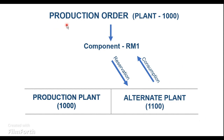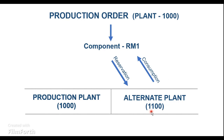So here, we are going to create a production order in plant 1000. And under the bill of material, we do have the component RM1. So this RM1, we are not going to stock it in the manufacturing plant, which is 1000, but this will always be stored in a different plant under the same company code, let's say 1100. So 1100 and 1000, they belong to the same company code.